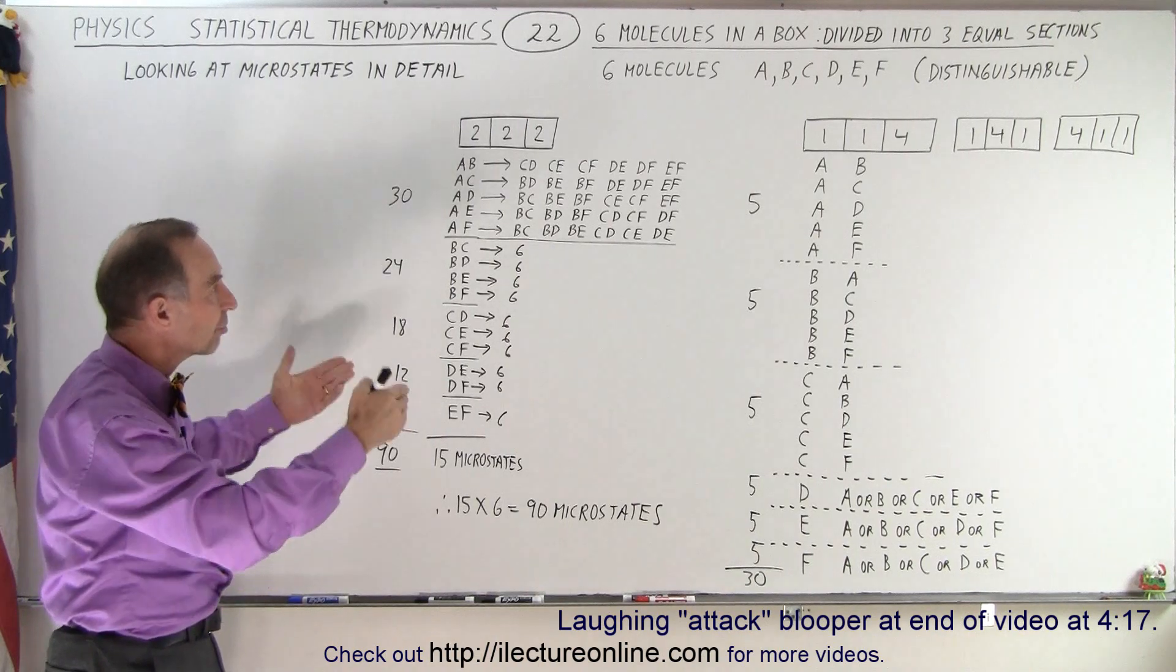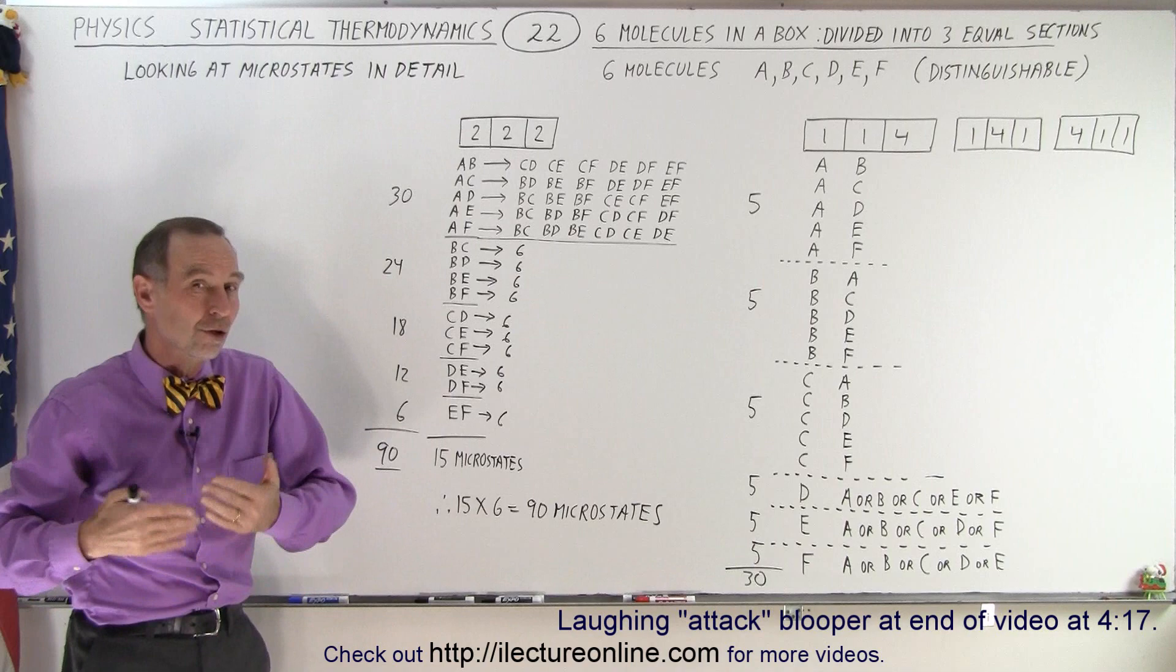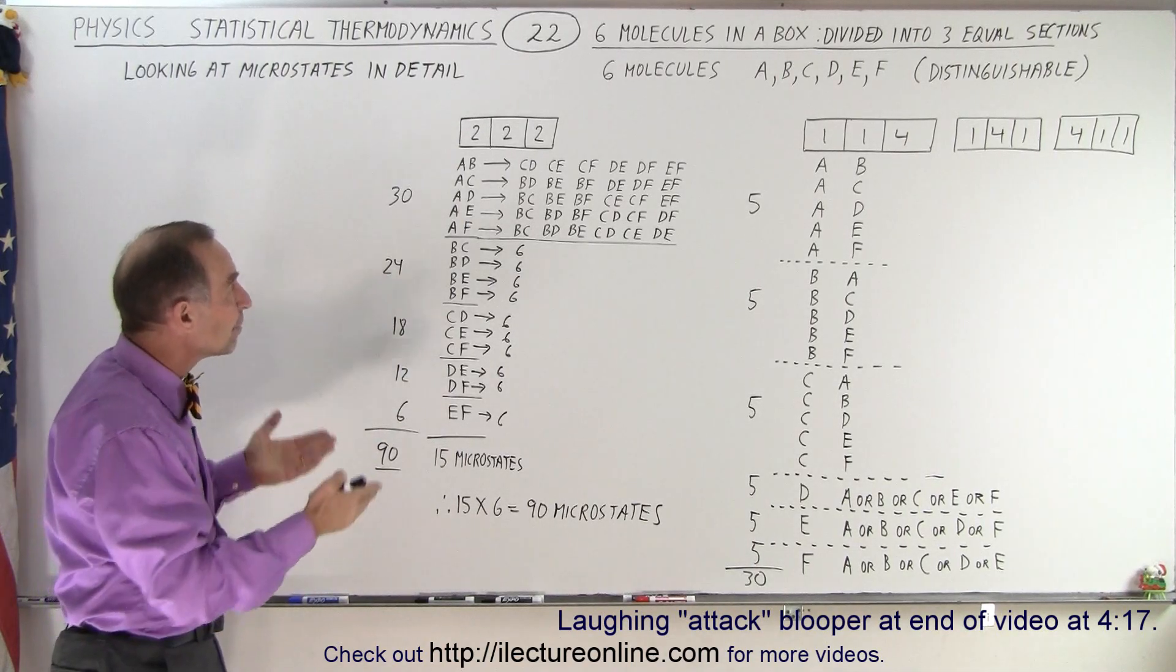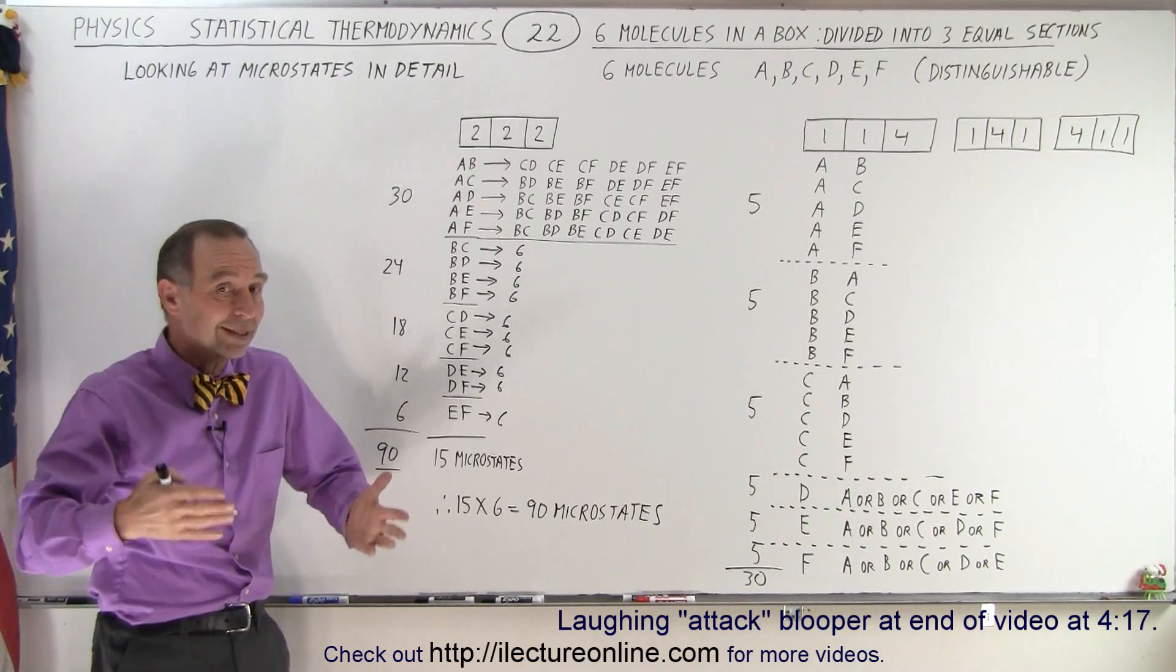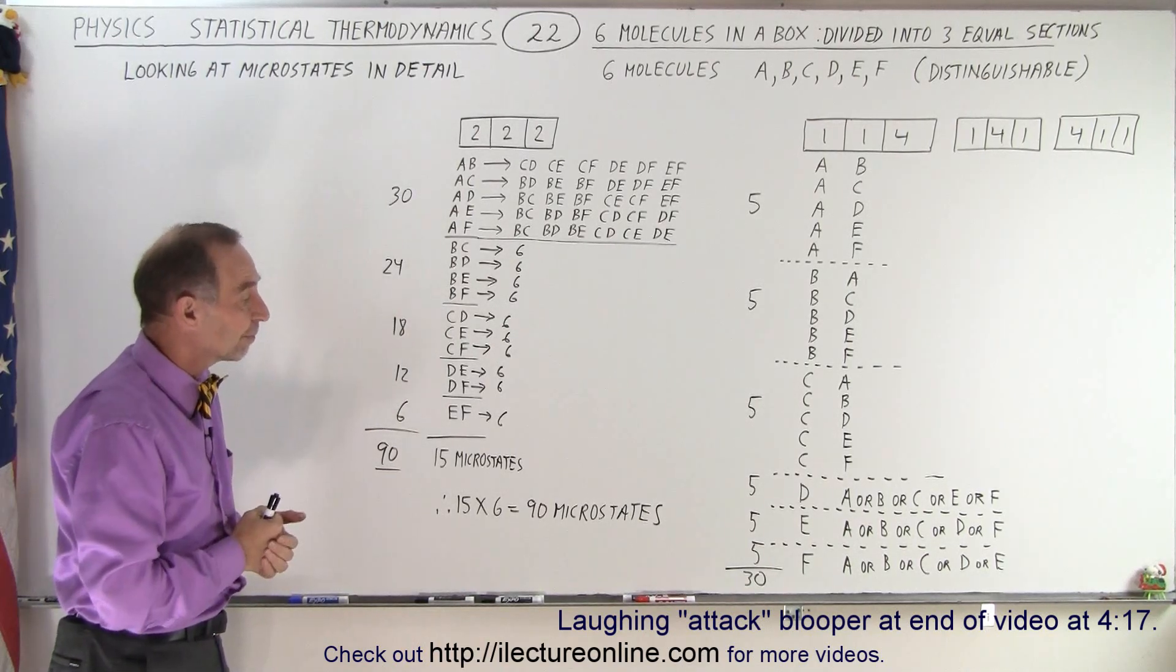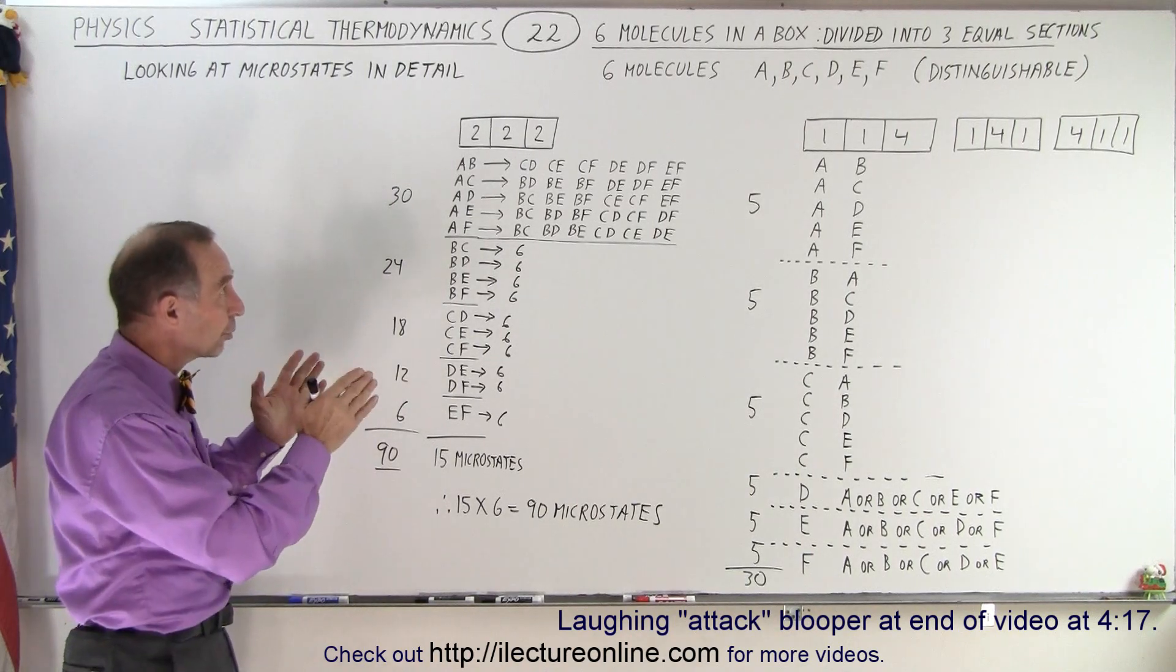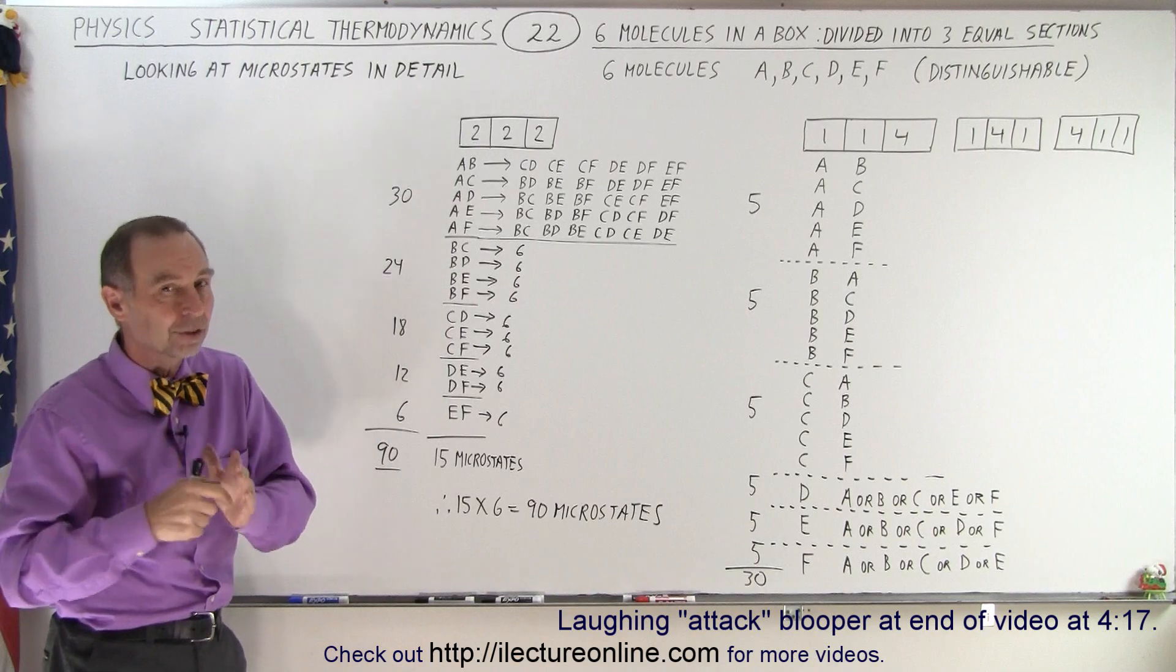So you can see that you can actually verify the number of microstates, therefore the number of what we call the thermodynamic probability, by simply identifying each molecule by a letter, A, B, C, D, E, and F, and see how they can be arranged in the various ways in each of those situations. Again, the total number of microstates when we have six molecules in a box partitioned to three equal parts is indeed seven hundred and twenty-nine.